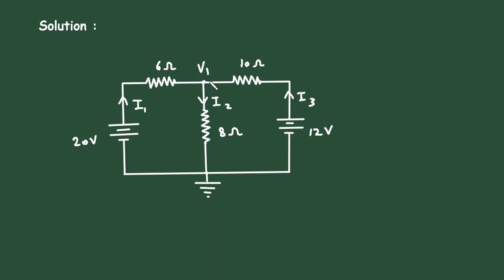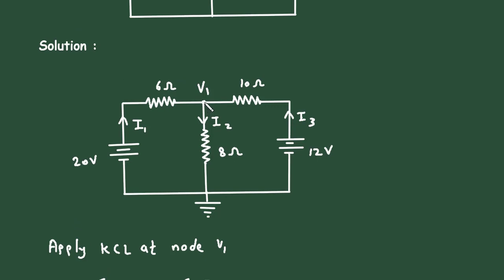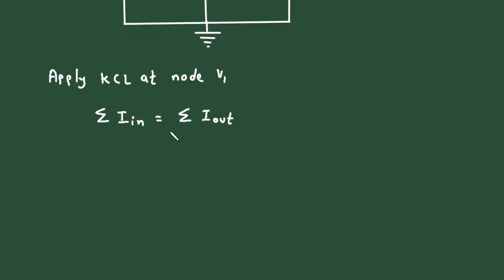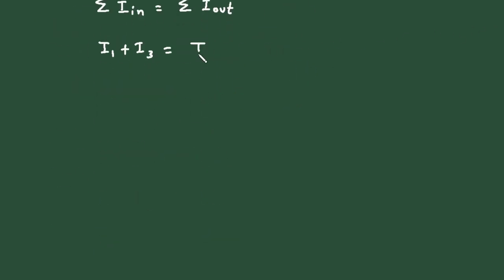Now apply KCL at node V1. KCL stands for Kirchhoff's Current Law. According to KCL, the summation of all the currents entering the node equals the currents leaving. At this node, the entering currents are I1 and I3, and the leaving current is I2. So we can write: I1 plus I3 is equal to I2.